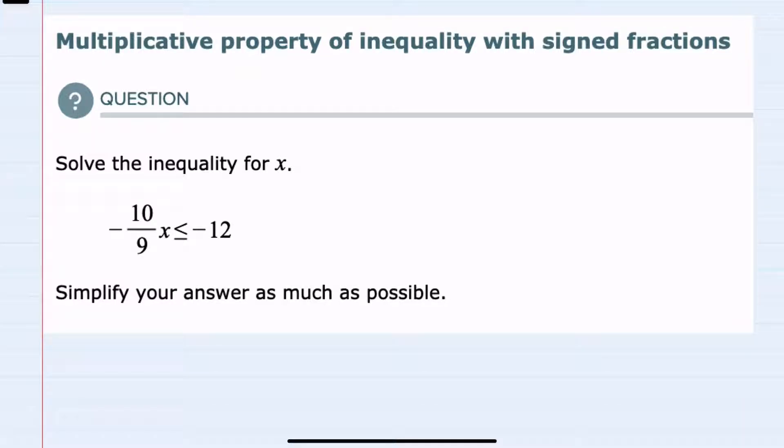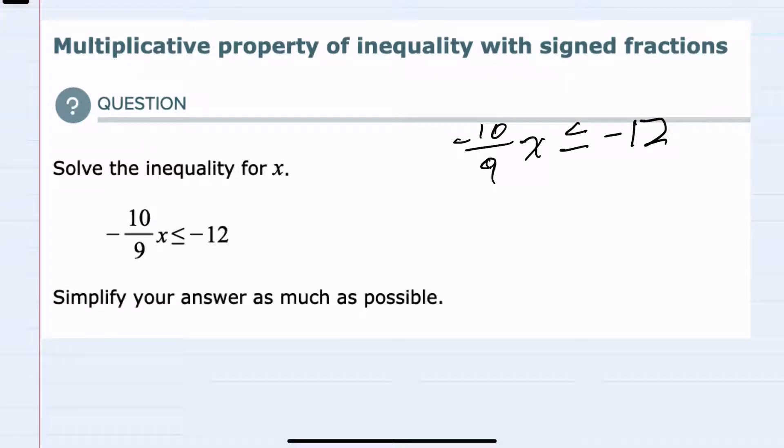In this video I'll be helping you with the ALEKS problem type called multiplicative property of inequality with signed fractions. We're given the inequality negative 10 ninths x is less than or equal to negative 12, and we're asked to solve this for x and simplify as much as possible.